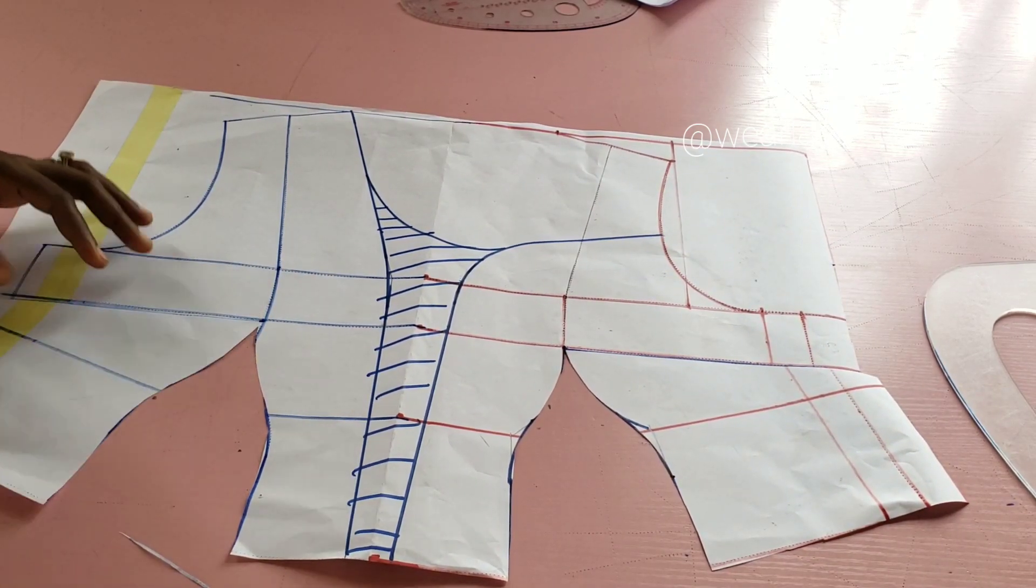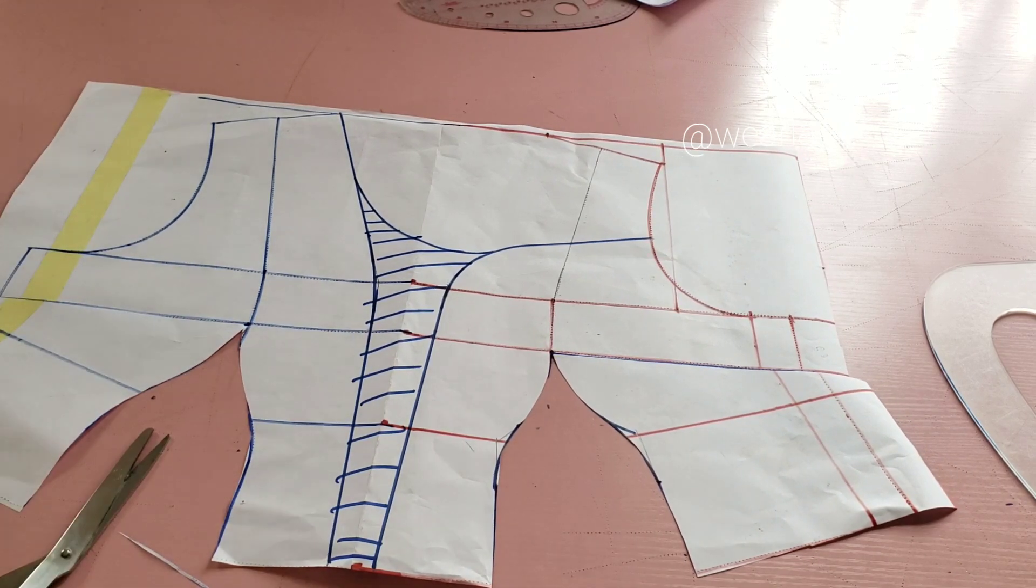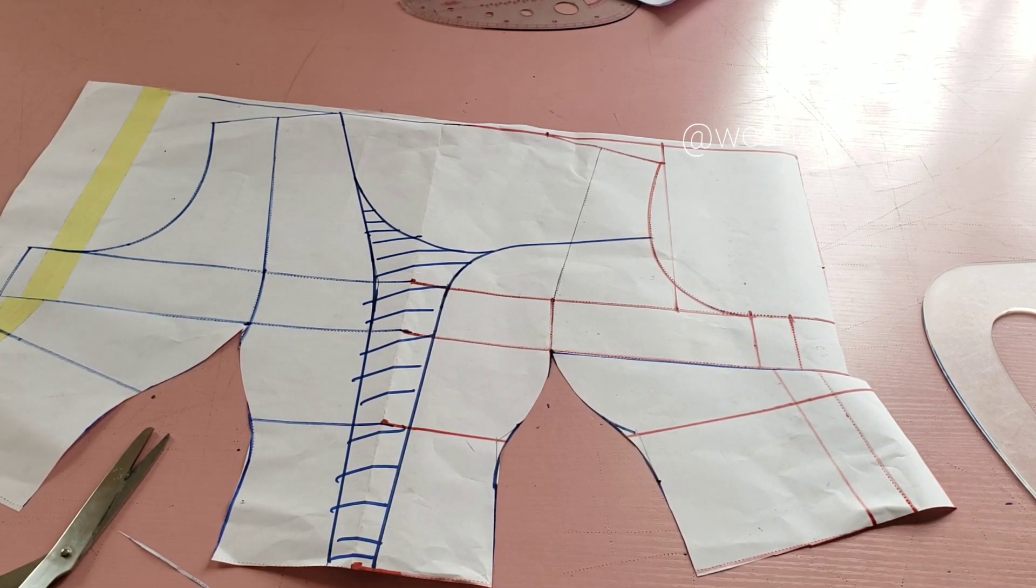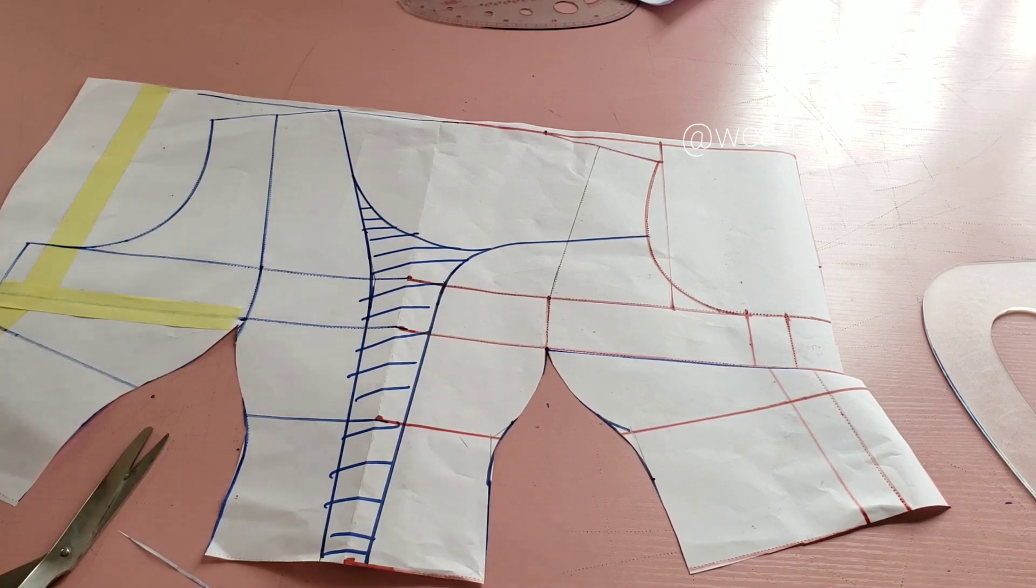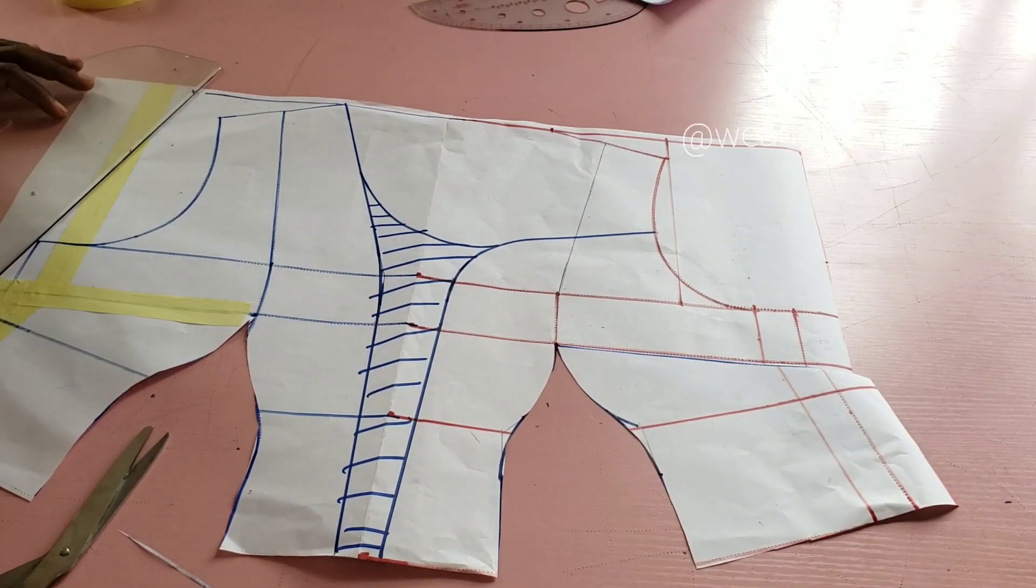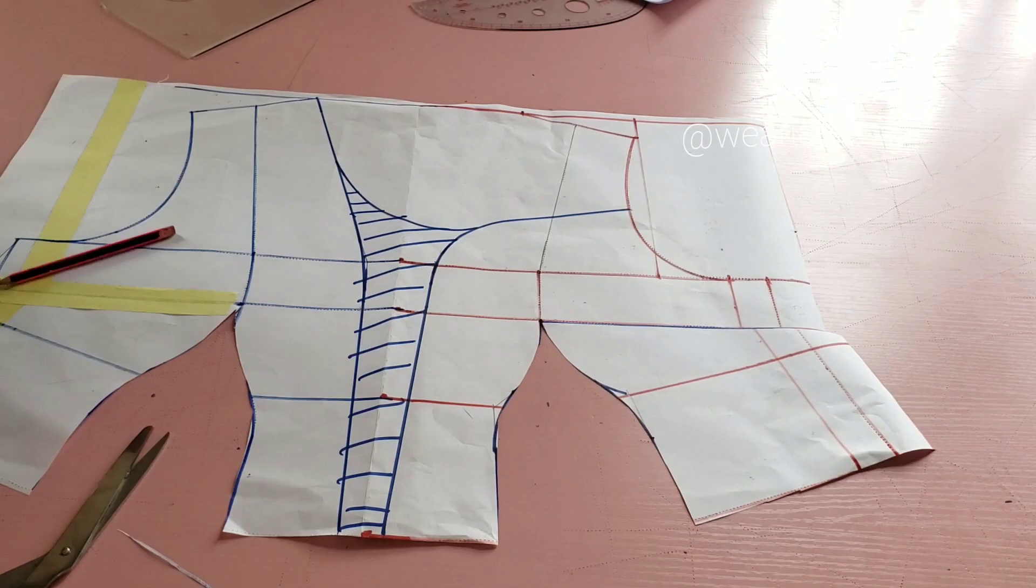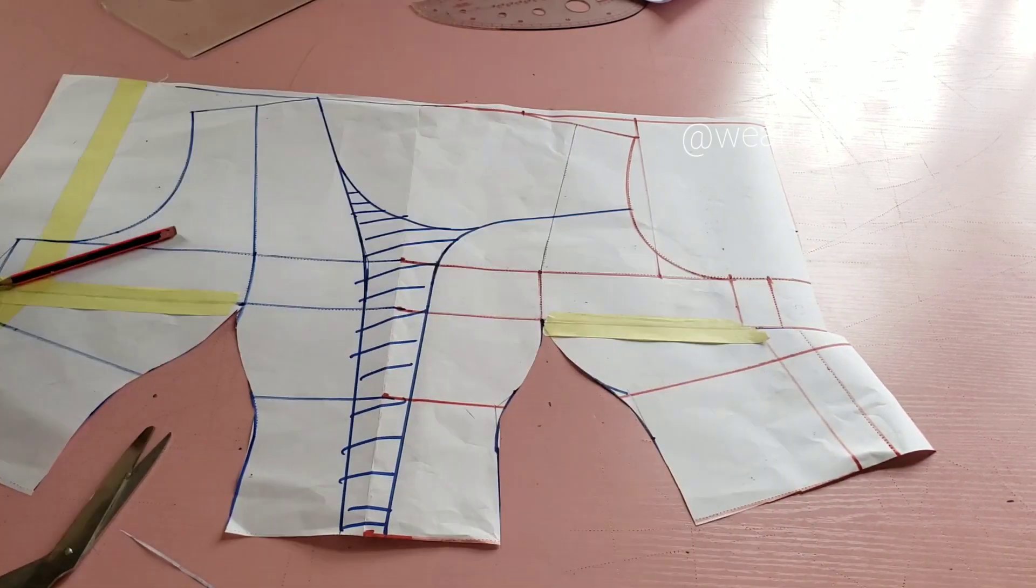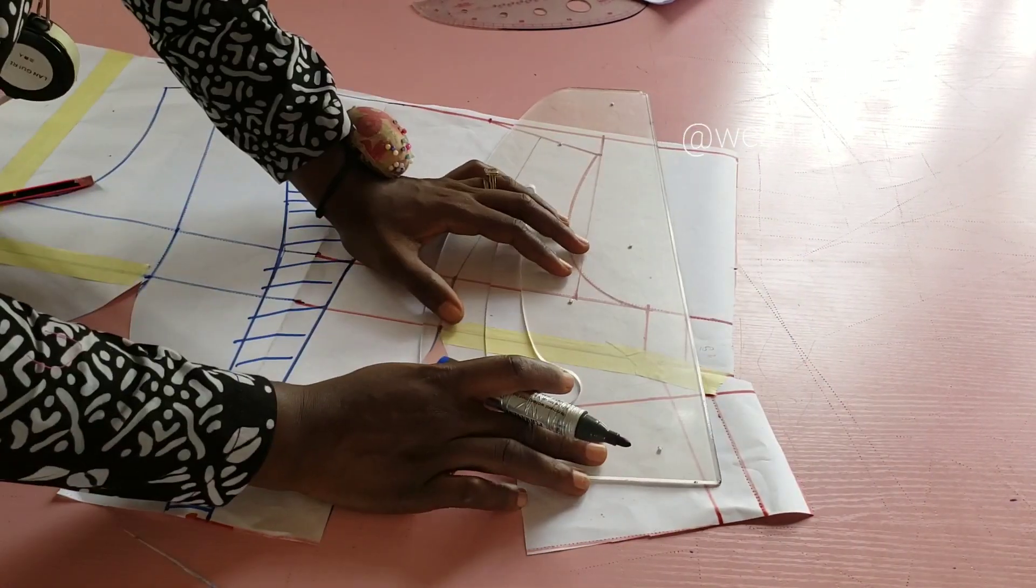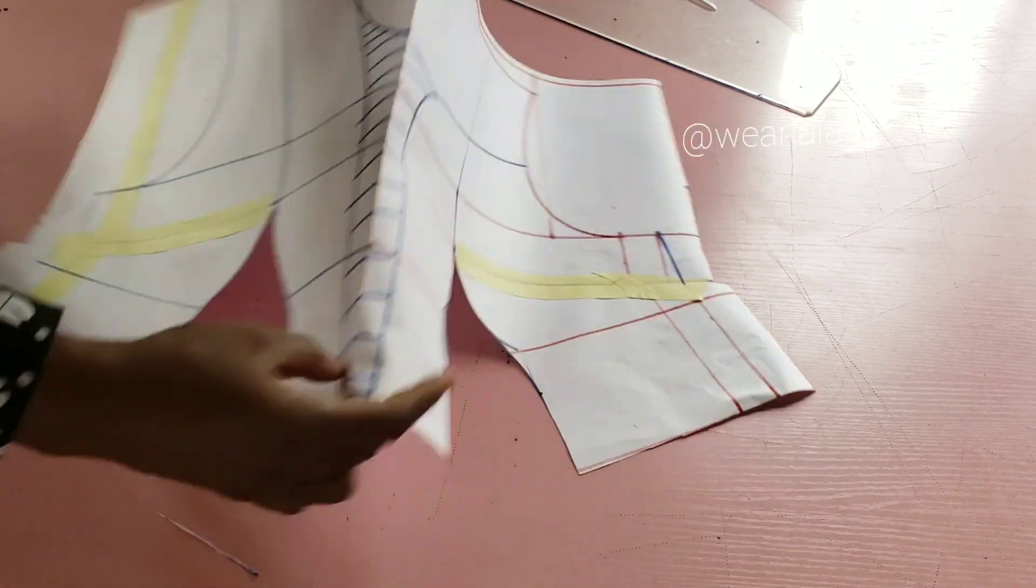So this is it here. Now I'll just use my masking tape to close it up. I'll just close it up like so. And then I can now separate my patterns. I'll just label everything but let me just quickly cut out this part here.